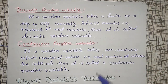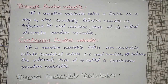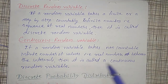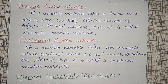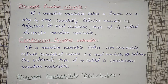Whereas a continuous random variable takes a non-countably infinite number of values within a given limit or interval. For example, the lifespan of a bulb may range from 5000 hours to 10000 hours, and those hours may include decimal values like 5.5, 5.55, and so on. Such things are known as continuous random variables.